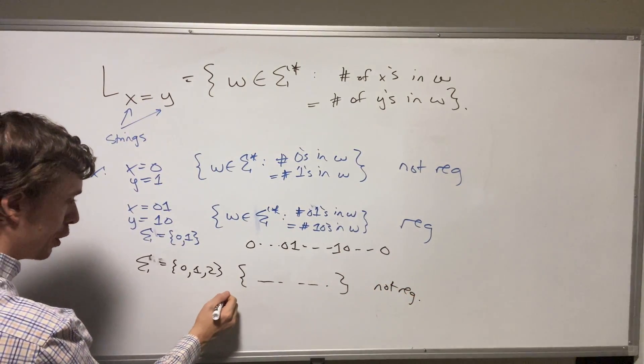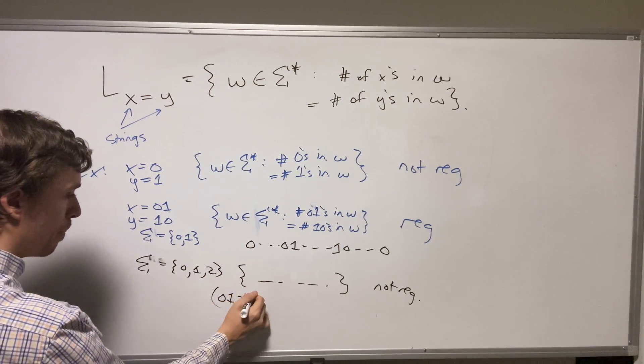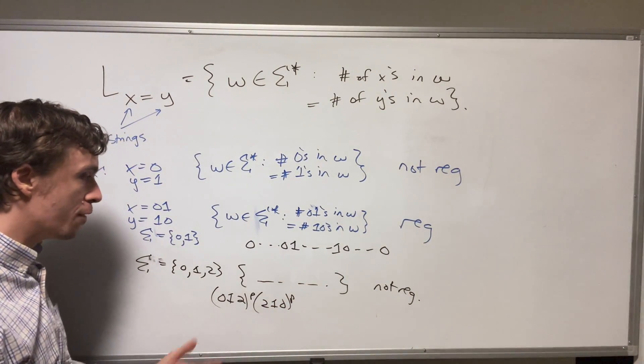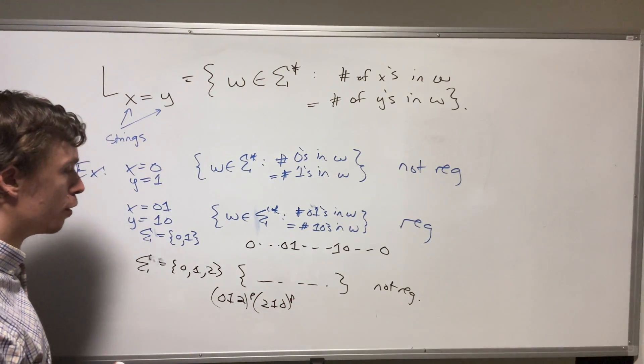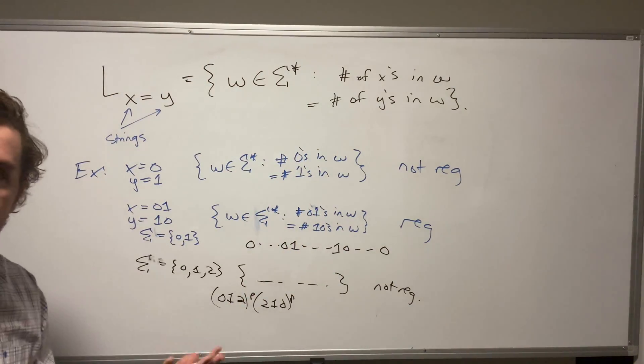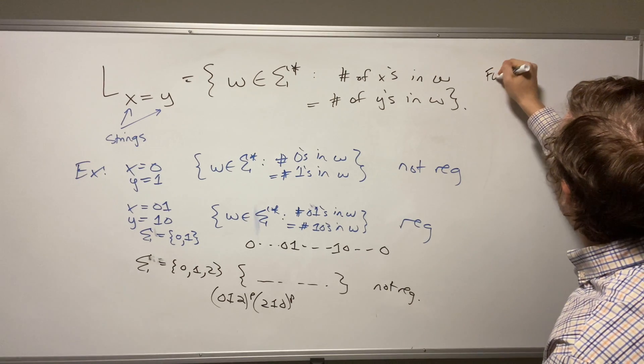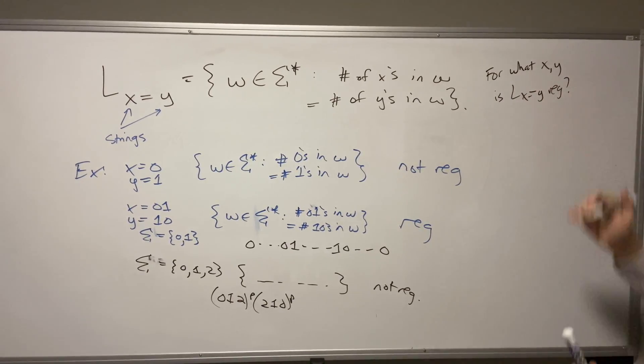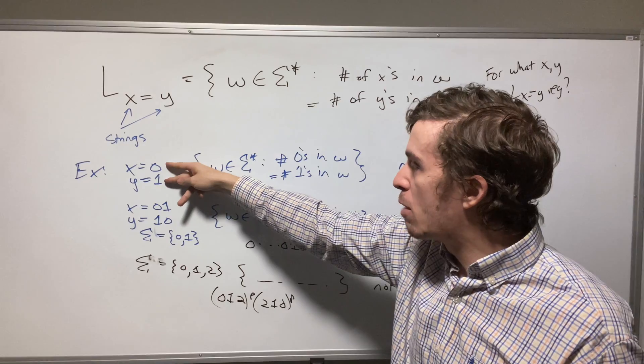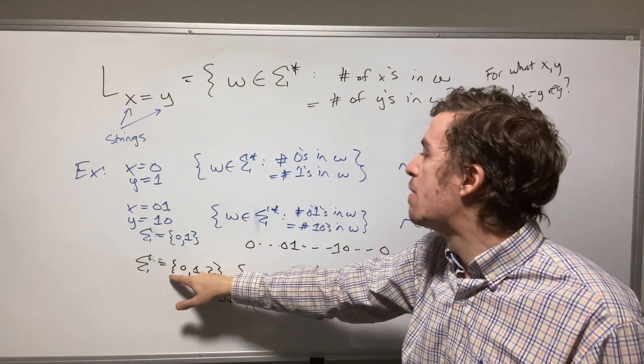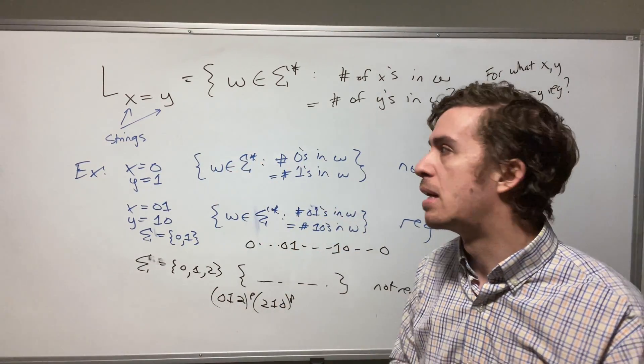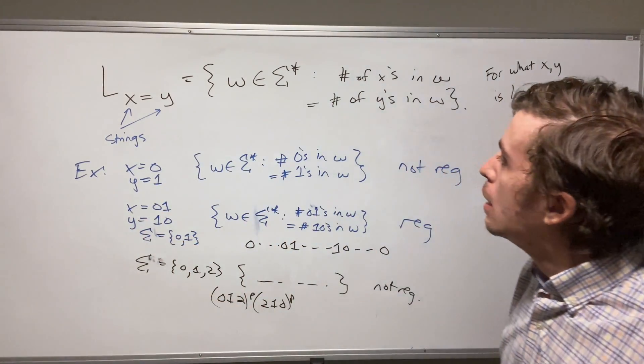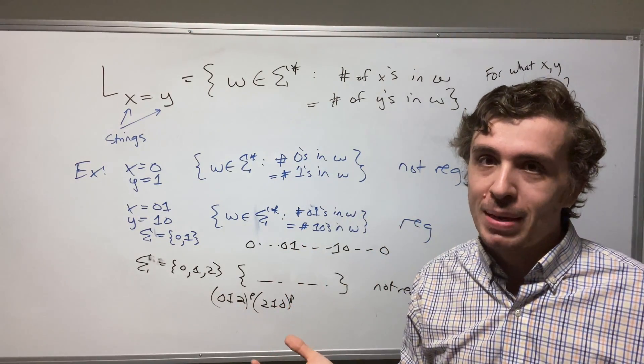But if we switch this over to the alphabet being zero one two, and we form the exact same language, then this thing is not regular. And the reason for this is that if you choose the string zero one two to the P, two one zero to the P, or something close to that, then you can show that you can pump out of the language here because they have the two separating them, the ones and zeros. So given the setup, what was the actual homework question? The homework question is for what X and Y is L X equal Y regular? So clearly it's not regular in some cases. It is regular in some cases.